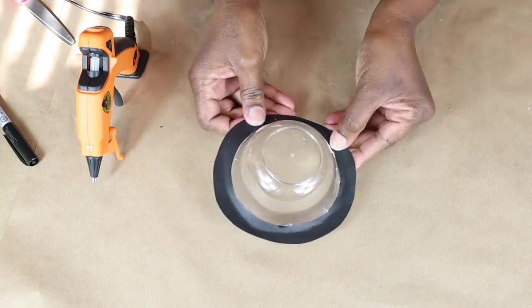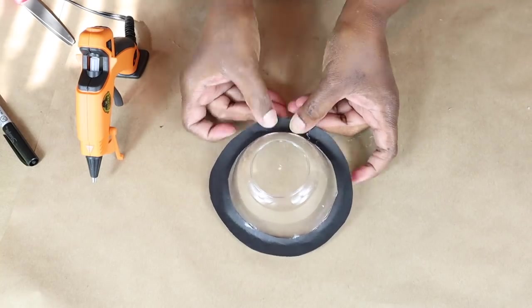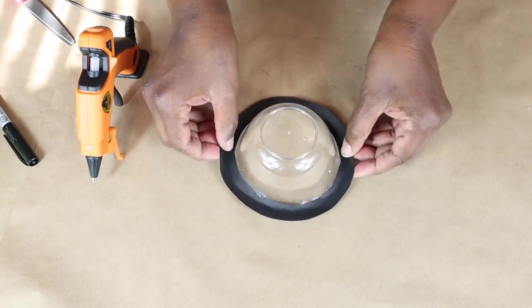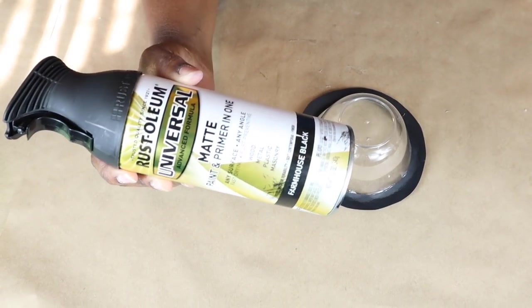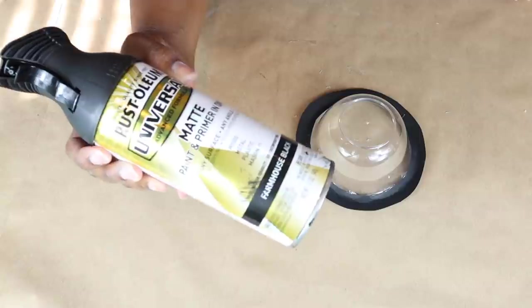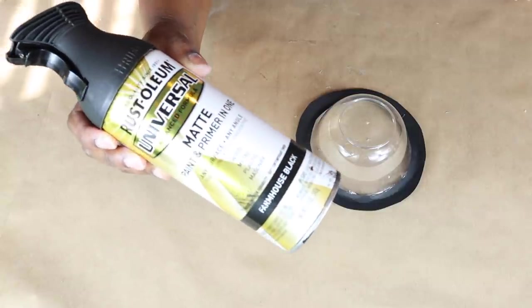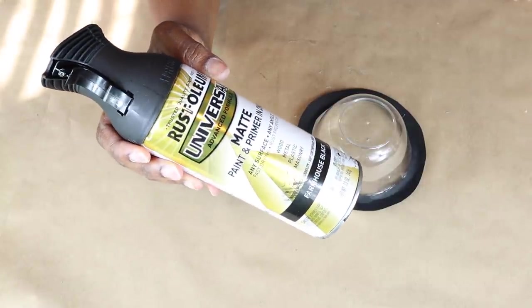Now I'm going to bend up the ends of it, of the poster board. And then I will take it outside and spray it with this Rust-Oleum Matte Farmhouse Black Spray Paint. I will paint the top and the bottom.